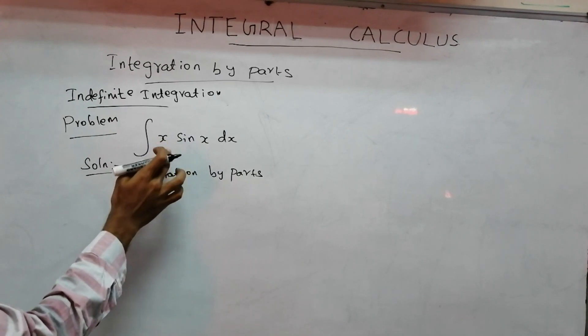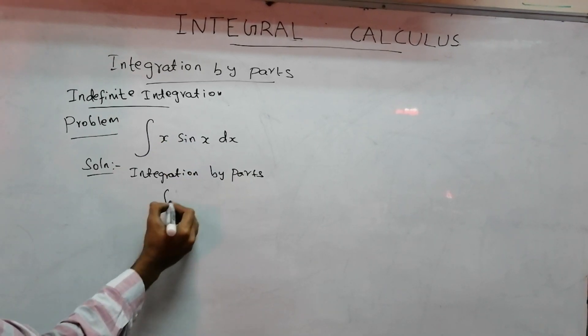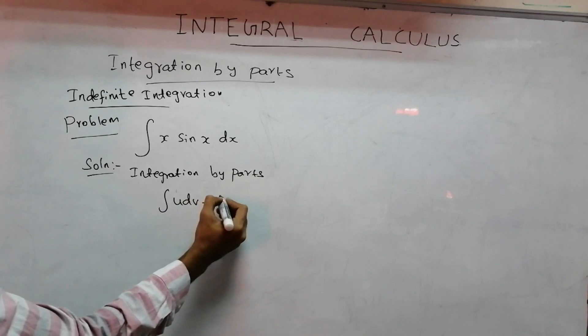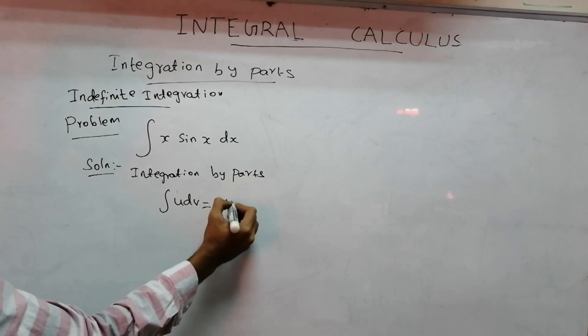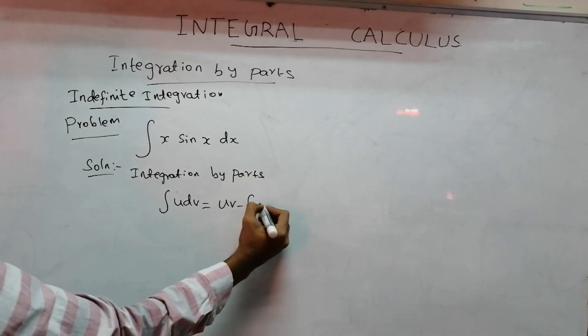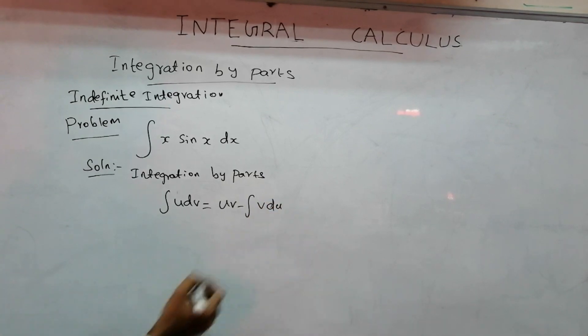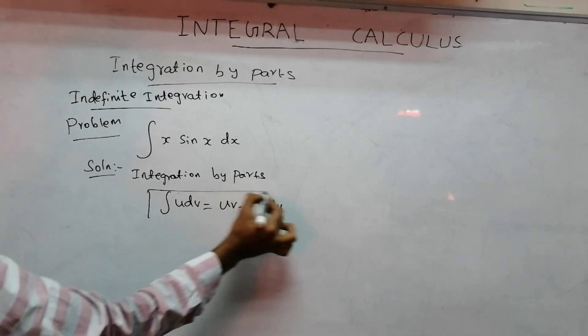In indefinite integration, the formula is called integration by parts: if u and dv are given, then the integral equals uv minus the integral of v·du. This is the formula.